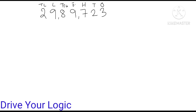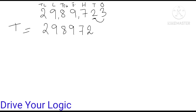Now with this number I can show you all the processes of rounding off. Let me start with round off to tens. For rounding to tens, this list of digits will not change — the answer of this number will be 2,989,720 — because the next digit after the tens place is not 5 and not more than 5; it is less than 5. So there will be no change, and the last digit becomes zero.